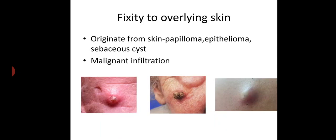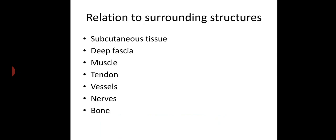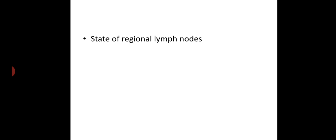Next, fixity to overlying skin — when the swelling arises from the skin, as in papilloma, epithelioma, or sebaceous cyst, and also in malignant infiltration. Next, assess the relation to surrounding structures like subcutaneous tissue, deep fascia, muscle, tendon, vessels, nerves, and bone. Also assess the state of the regional lymph nodes.